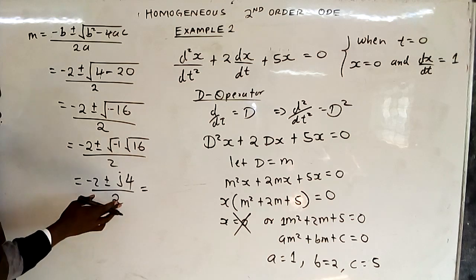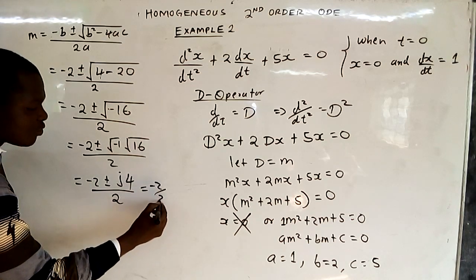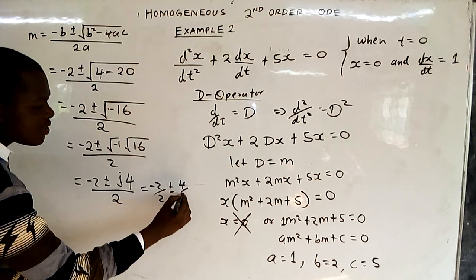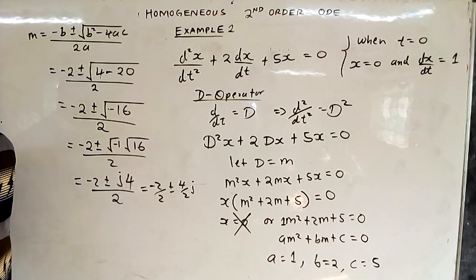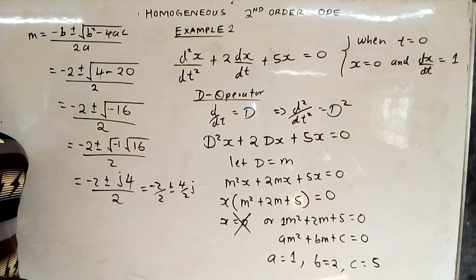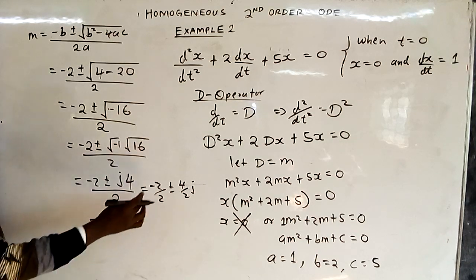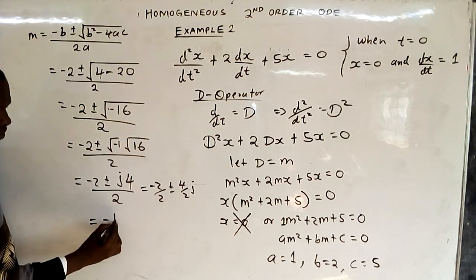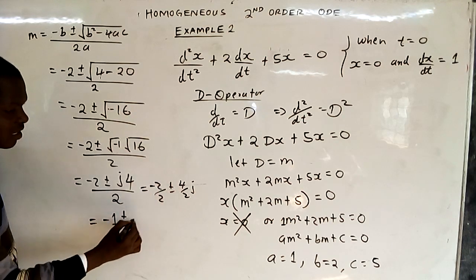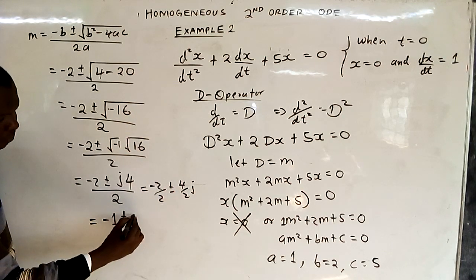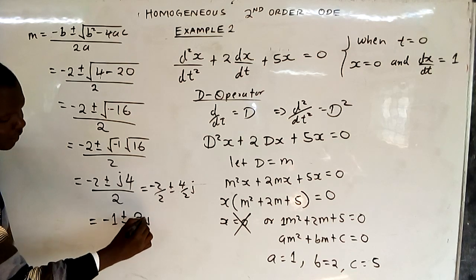Dividing everything by 2 with common denominator 2: that is negative 2 over 2 plus or minus 4j over 2. Negative 2 divided by 2 is negative 1, and 4 divided by 2 is 2. So we have negative 1 plus or minus 2j.